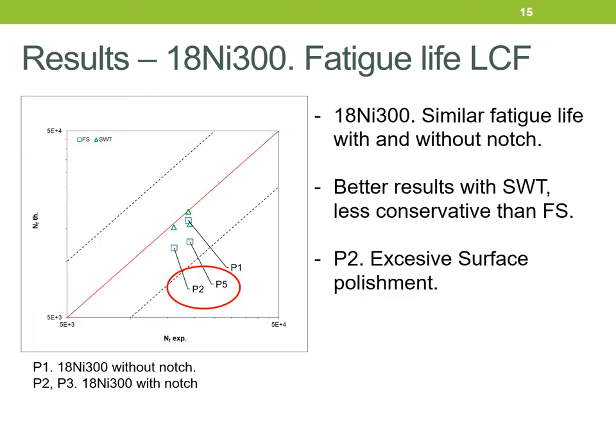Fatigue life values estimated by both models are shown for the low cycle fatigue test. Sample one is without notch; samples two, three, and five are with notch. As the finite element model is not yet defined for this material, all results are calculated using extensometer strain values. Fatemi-Sossi estimations are shown with blue squares, and Smith-Watson-Topper with green triangles. Fatigue life predictions for all samples are similar; better results are obtained with Smith-Watson-Topper, while Fatemi-Sossi is more conservative.